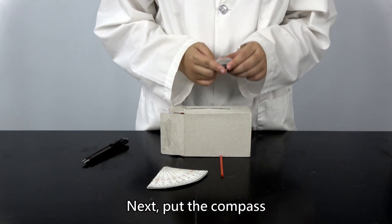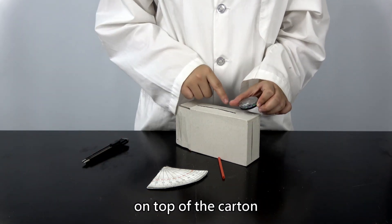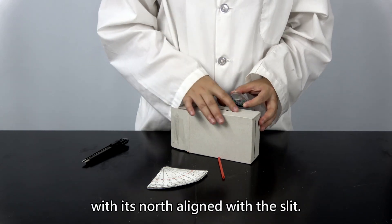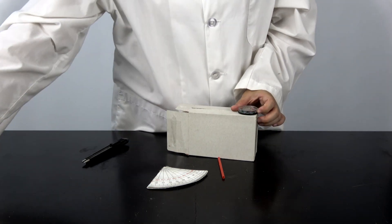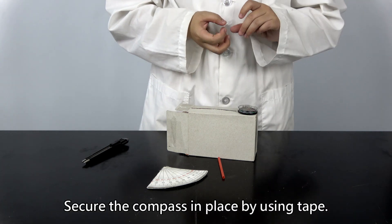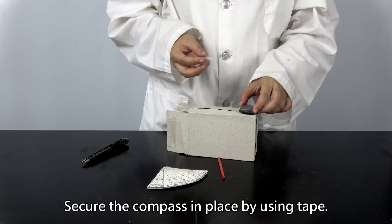Next, put the compass on top of the carton with its north aligned with the slit. Secure the compass in place by using tape.